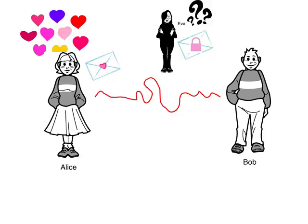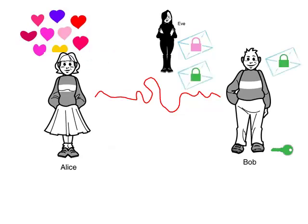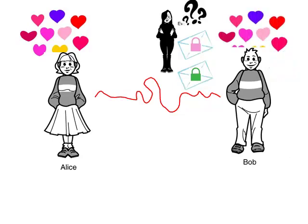Now Alice wants to reply to Bob, which is easy. Alice also has Bob's lock, which matches his key — nobody except Bob has that key. So she locks her reply with Bob's lock and sends it along. Eve also gets a copy of the reply, but she doesn't know this key either. In the end, Alice and Bob have succeeded in transmitting to each other something very important and very private, while Eve is left in the dark.